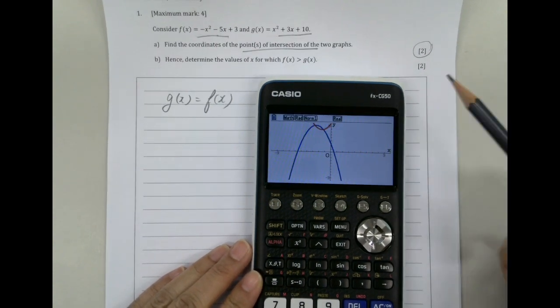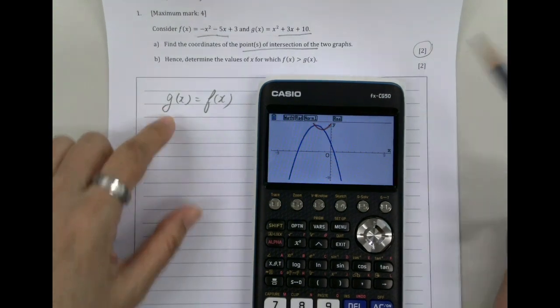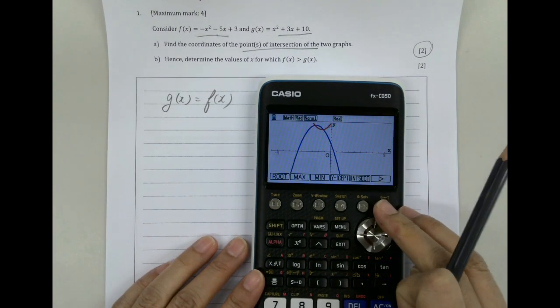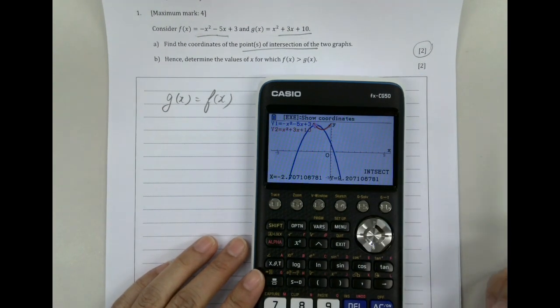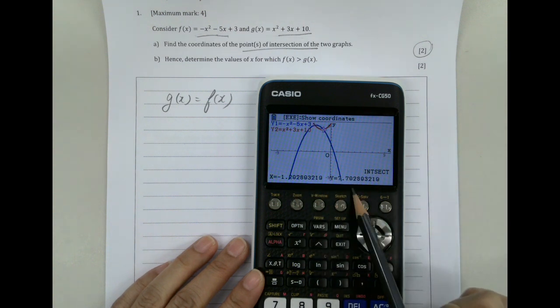Now this should work. We can see these two points here. We want to intersect, so we go to G-solve, intersect. You got your answer here and the second answer here.